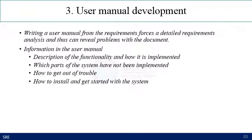The third requirement validation technique is user manual development. Writing a user manual from the requirements forces a detailed requirement analysis and can reveal problems with the document and information. The user manual contains a description of the functionality and how it is implemented, includes parts of the system that have not been implemented, helps users get out of trouble, and lays down installation steps and getting started with the system.